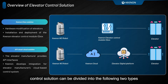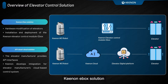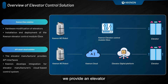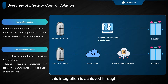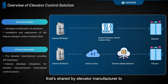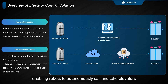Elevator Control Solutions can be divided into the following two types: the Kenan EBOX Solution and the Kenan API Solution. The Kenan EBOX Solution is fully self-developed by Kenan. We provide an Elevator Control Integration Module called EBOX, achieved through hardware modifications to the elevator, enabling robots to control the elevator. The Kenan API Solution uses APIs shared by elevator manufacturers to control their elevators through cloud-to-cloud integration, enabling robots to autonomously call and take elevators.